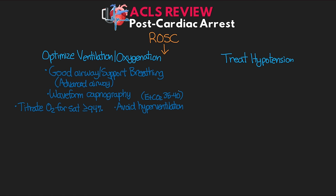In addition to what we just talked about, we do want to be treating our patient's hypotension when their systolic blood pressure is less than 90 or their MAP is less than 65. Hopefully you already have it, but if not, make sure that you get IV/IO access immediately. And even if you do have it, it's going to be really important to make sure that it's actually patent and functional. Once you have good IV/IO access, we're going to want to treat our patient's hypotension, first with fluids and then with the use of vasopressors.